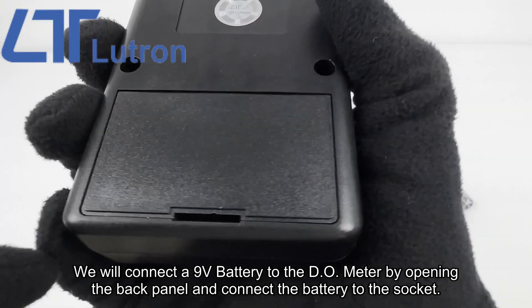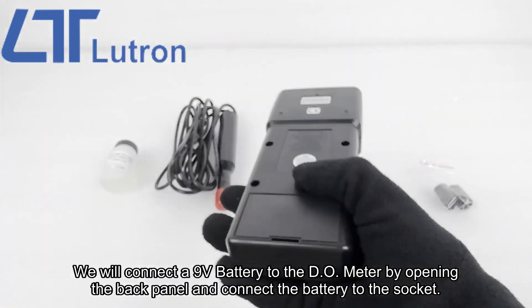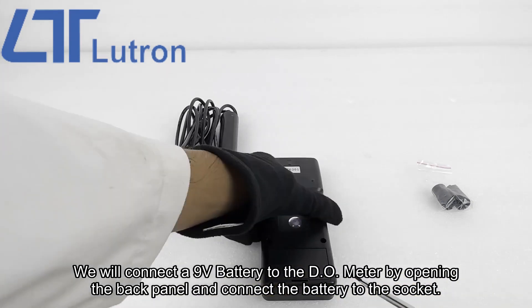We will connect a 9V battery to the DO meter by opening the back panel and connecting the battery to the socket.